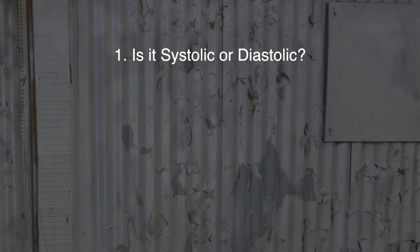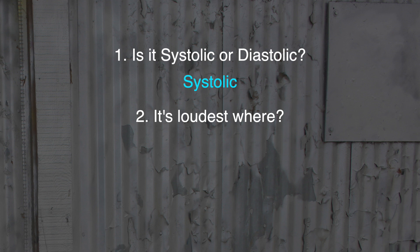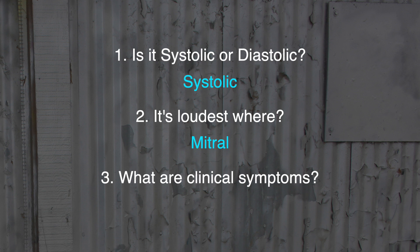Moving on to mitral valve prolapse — let's take a listen. Is it systolic or diastolic? It's systolic. Where do you hear it the loudest? It's mitral, and sometimes you'll hear a systolic click. You hear it best when the patient is laying on their side. Clinical symptoms include palpitations and sometimes chest pain. The etiology is typically for childbearing-age women between 14 and 30 years of age. This type of heart murmur is typically monitored annually for change, and you want to make sure they see the cardiologist.